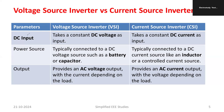According to the DC input, if I talk about the voltage source inverter, it takes a constant DC voltage as an input source. When it comes to the CSI or current source inverter, it takes a constant current as its input. That is the major difference.